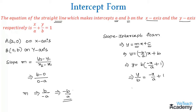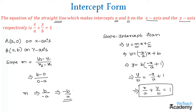Transferring the x term to the left-hand side we get x/a + y/b = 1. This is the equation of the straight line which makes intercepts a and b on the x-axis and y-axis respectively.